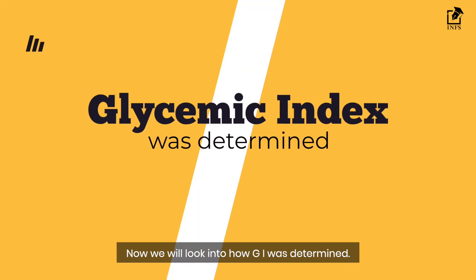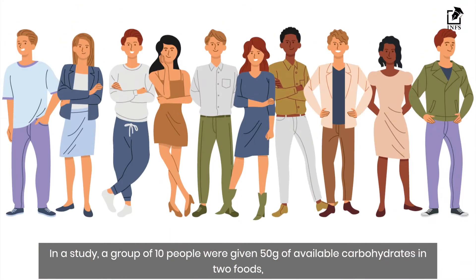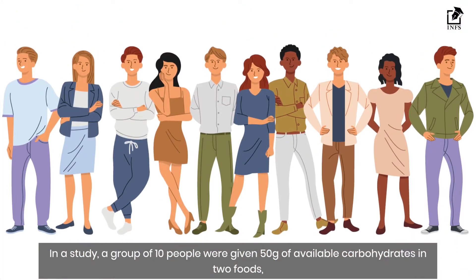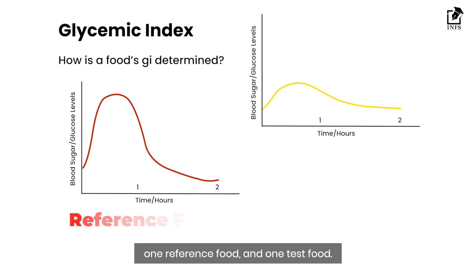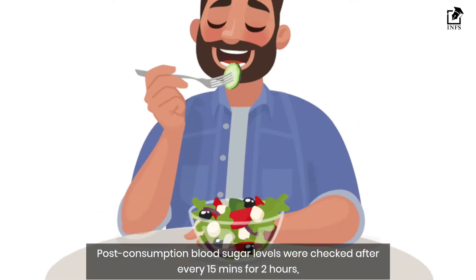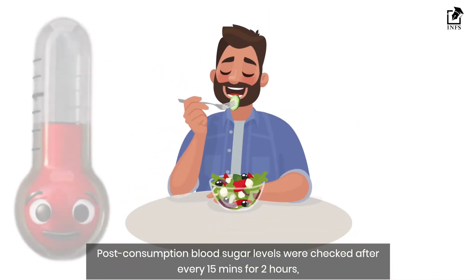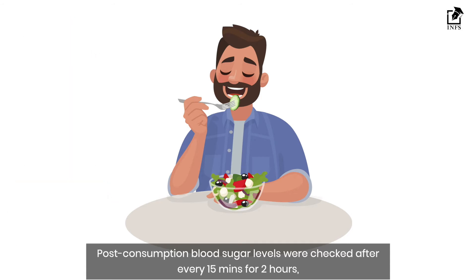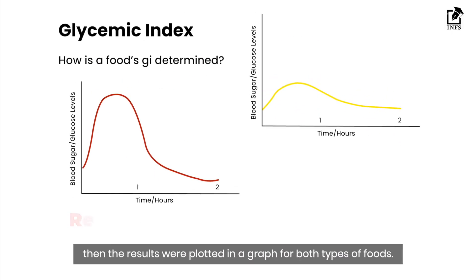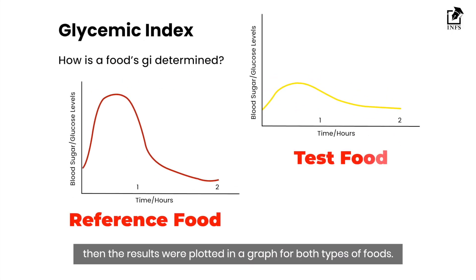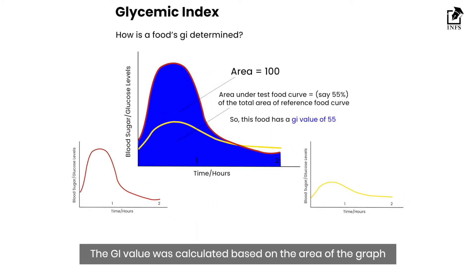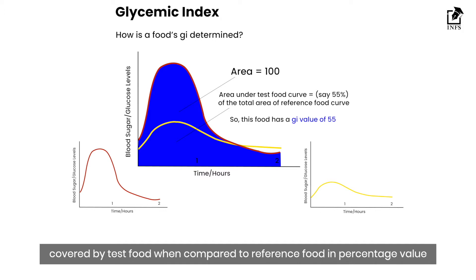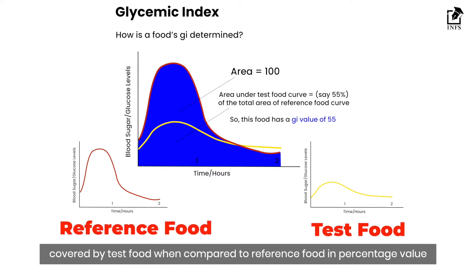Now we will look at how GI was determined. In a study, a group of 10 people were given 50 grams of available carbohydrates in two foods — one reference food and one test food. Post-consumption, blood sugar levels were checked after every 15 minutes for two hours. The results were plotted in a graph, and the GI value was calculated based on the area covered by the test food compared to the reference food, expressed as a percentage value.